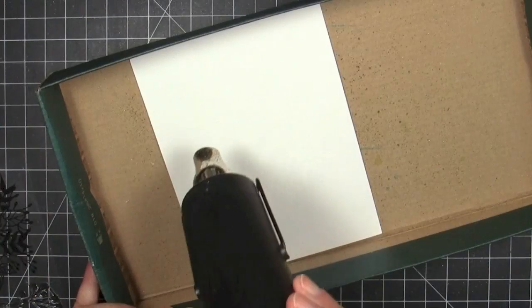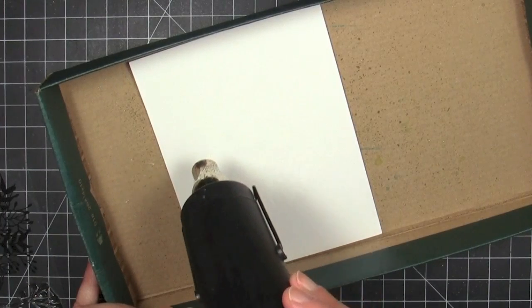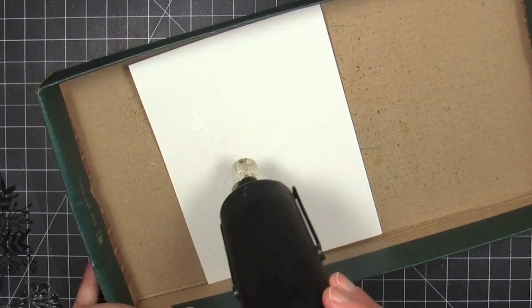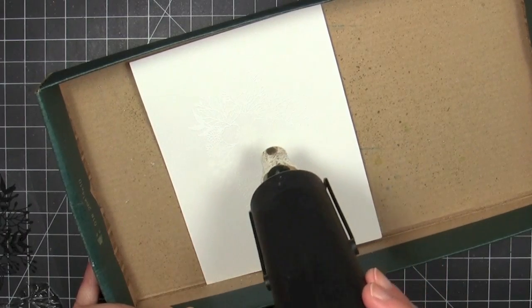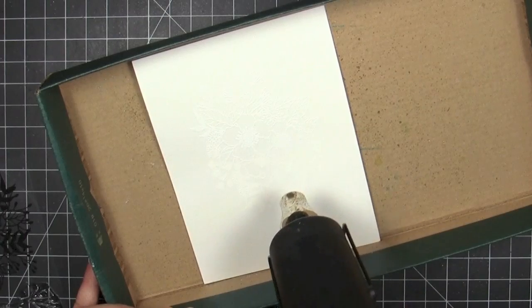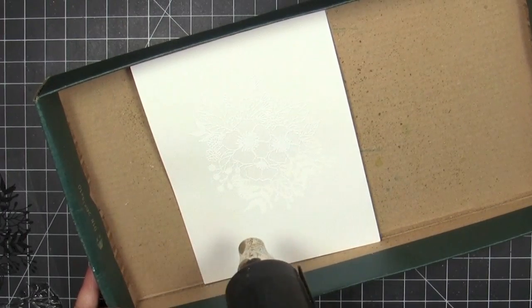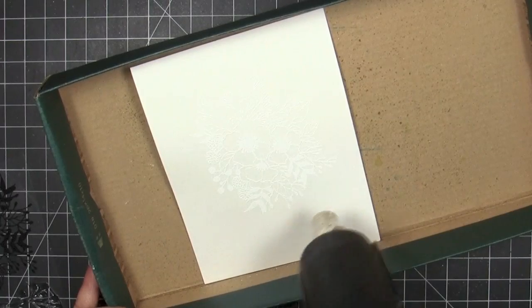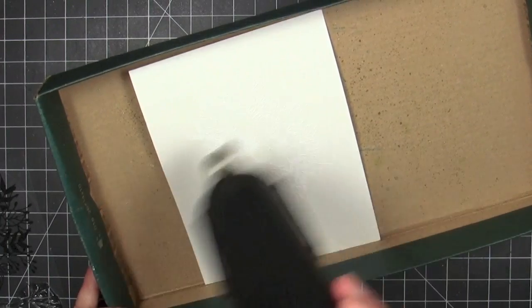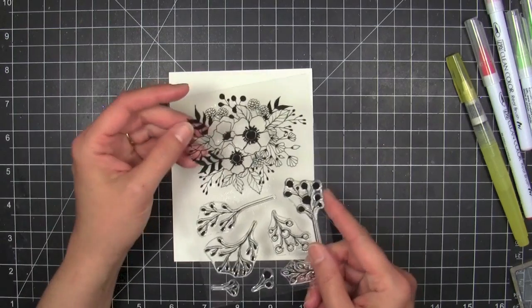And then I'm gonna go ahead and preheat my heat gun for about a minute and then start to heat. Now it's hard to see right here on camera because it's basically white on white but you want that granular powder to turn nice and shiny and then you know that you've melted it and it's not gonna go anywhere. So once we're done and it's cool we can go ahead.